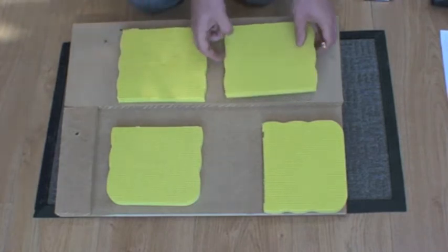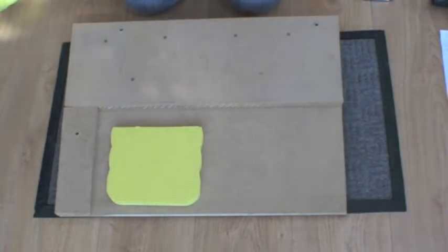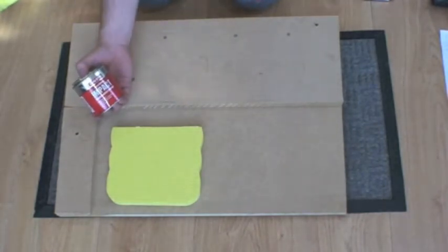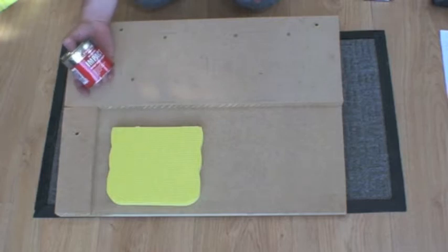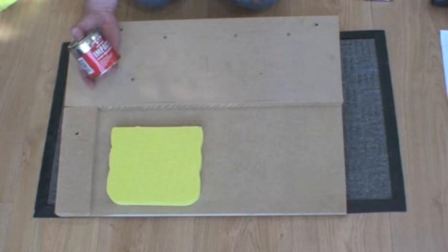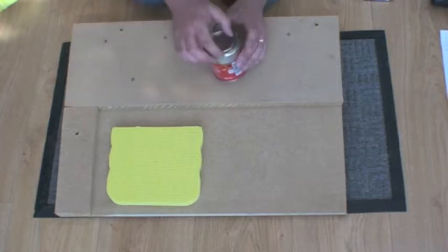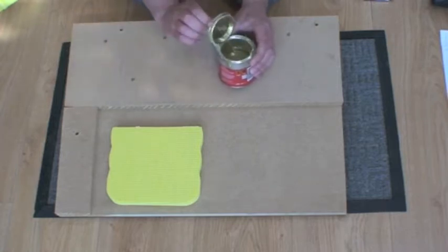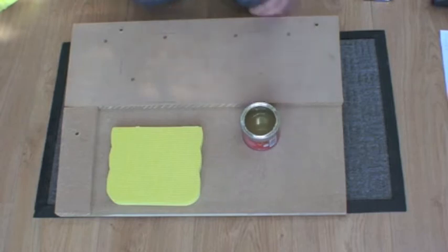So the gluing of the pads, we're using an Evo Stick impact glue. This is a solvent-based glue, so you do need ventilation when you're using it. You can buy it from any DIY store for about £3.50. As you can see, it's quite a runny glue. It comes with its own spatula.